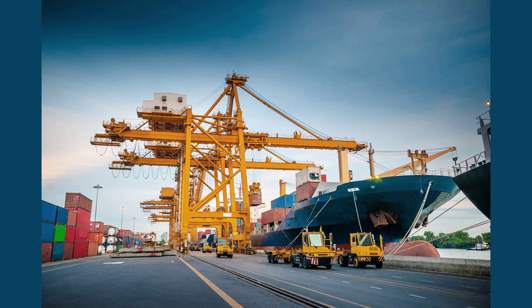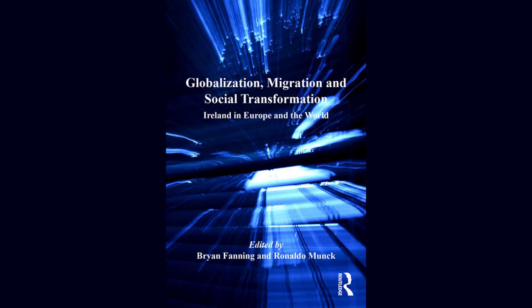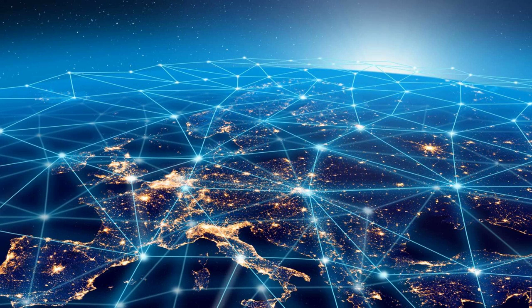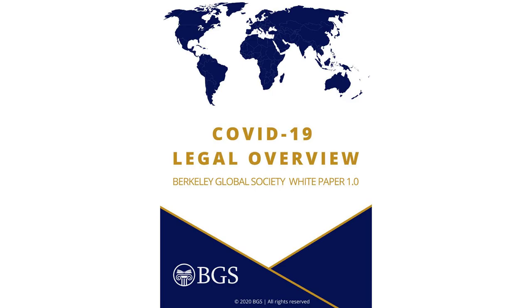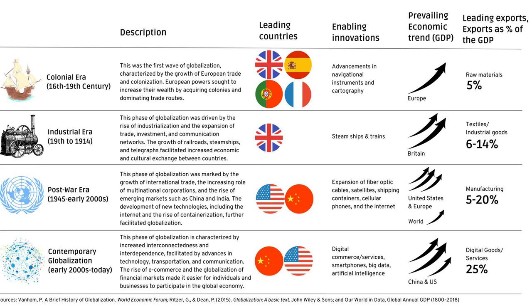And there you have it — the captivating history of globalization. From its humble beginnings on the ancient Silk Road to the digital age of today, globalization has transformed our world in profound ways. It has connected us, expanded our horizons and fostered the exchange of ideas and cultures. But it has also presented challenges such as economic inequality and cultural homogenization. As we continue to navigate the complexities of globalization, it is important to reflect on its impact and strive for a more inclusive and sustainable global society.